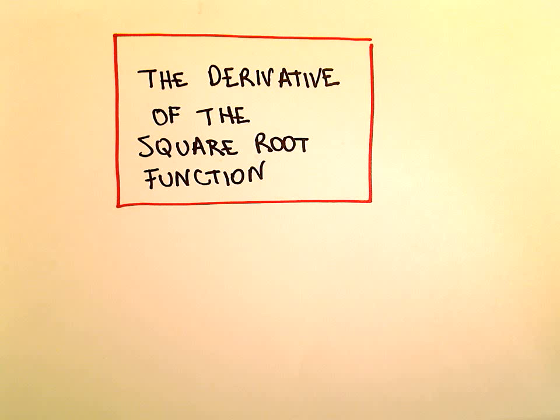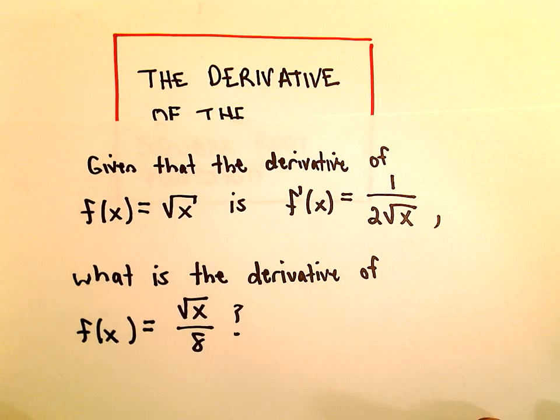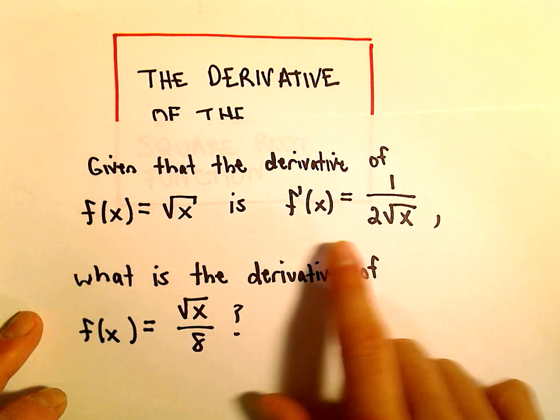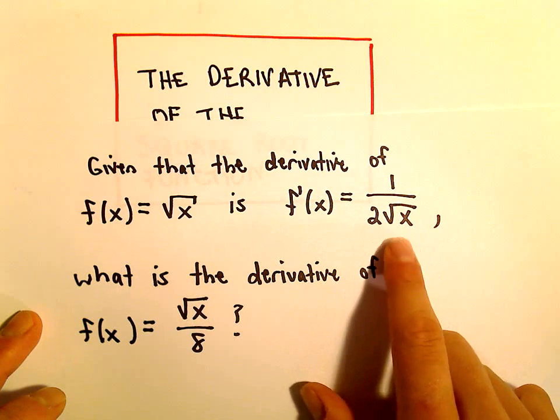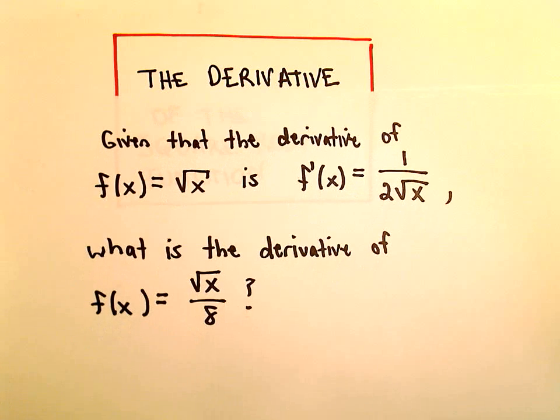Alright, in this video we're going to look at an example related to the derivative of the square root function. So, suppose we're given that the derivative of square root of x is 1 over 2 times the square root of x. We want to know what's the derivative of square root of x over 8.